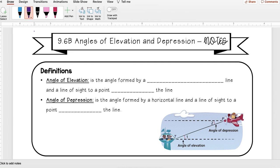So first, angle of elevation. This is the angle formed by a horizontal line and a line of sight to a point above the line.